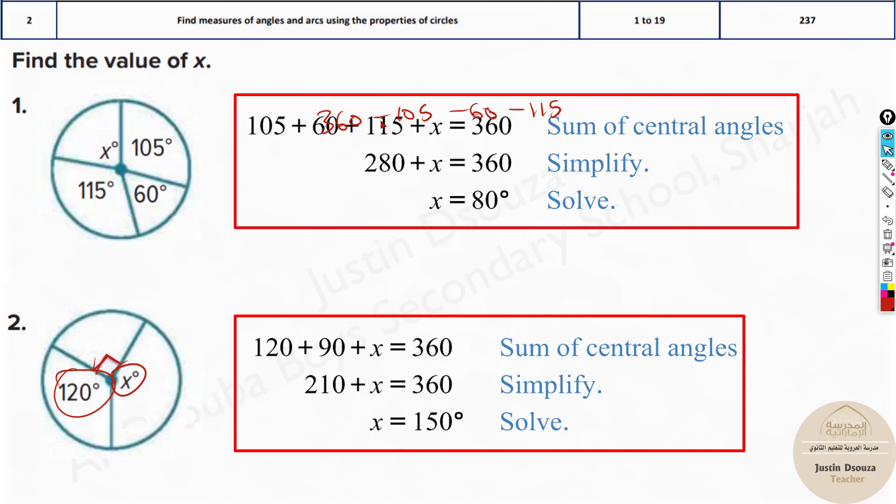You can see here the sum of central angles means adding all the angles equals 360. What I did was I've just taken this directly to the other side.